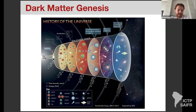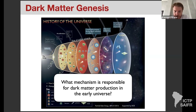We believe everything started with the Big Bang, followed by a phase where the universe was very hot and dense, dominated by a radiation bath. Then we had nucleosynthesis, where heavy nuclei formed, then recombination when the universe became neutral, then galaxy formation, until we reach the present time. The question I want to address during this lecture — which will be entirely devoted to dark matter production mechanisms — is: what mechanism could be responsible for dark matter production in the early universe?